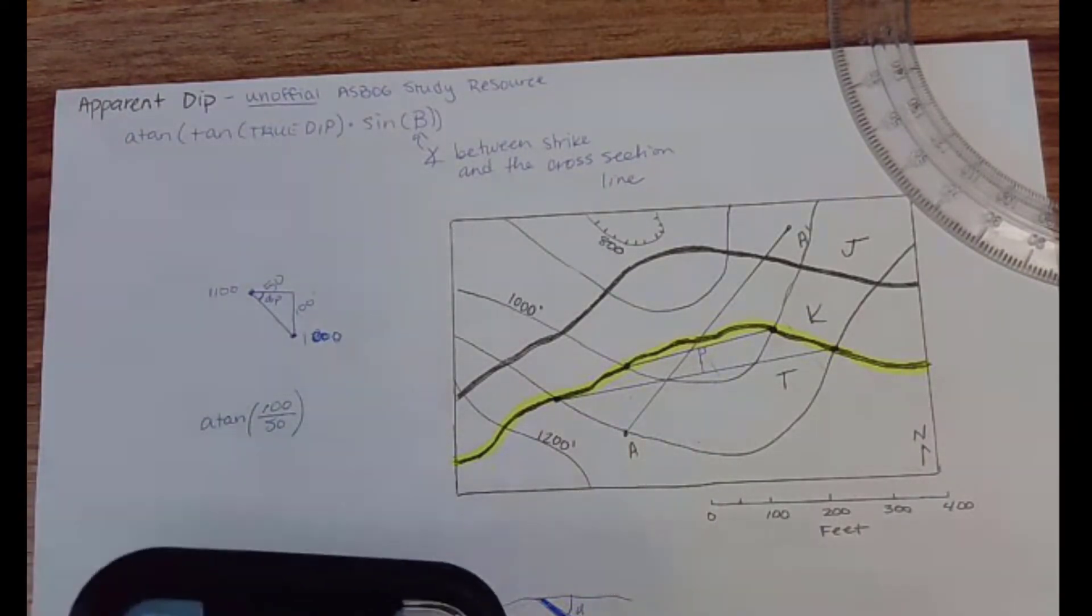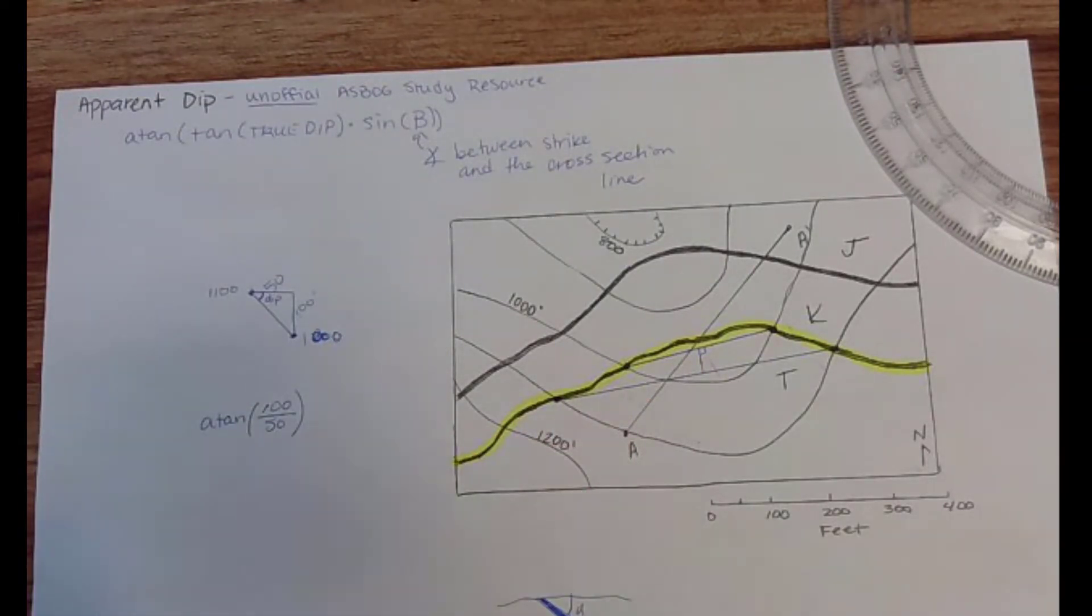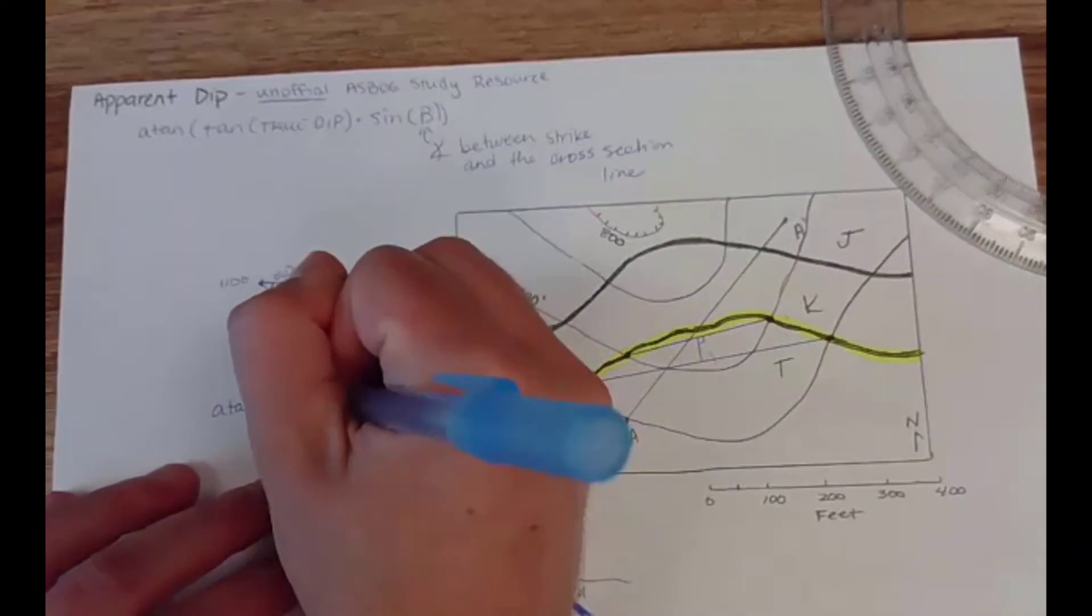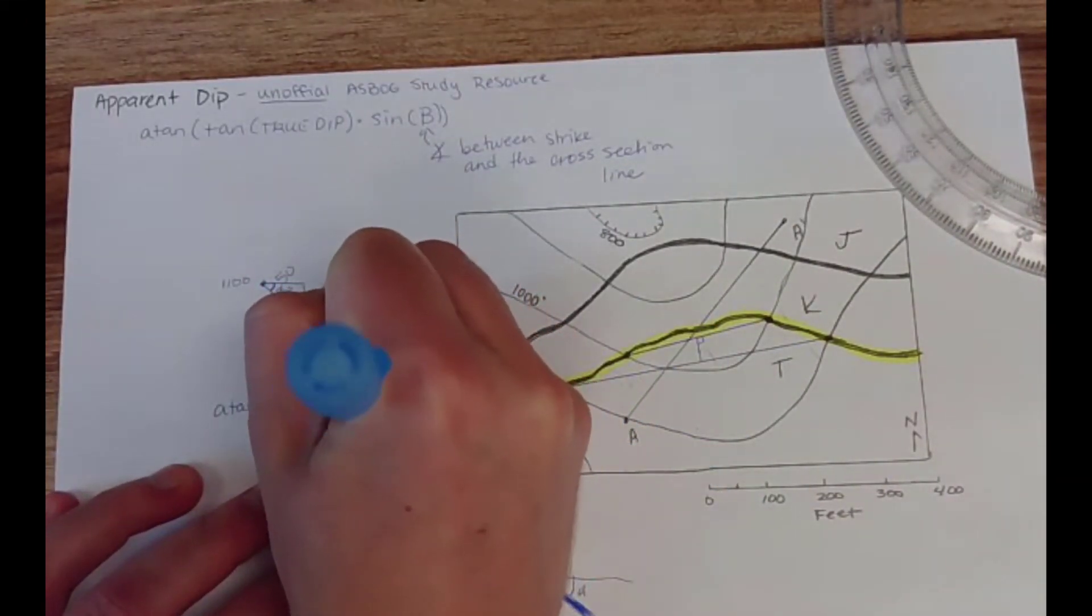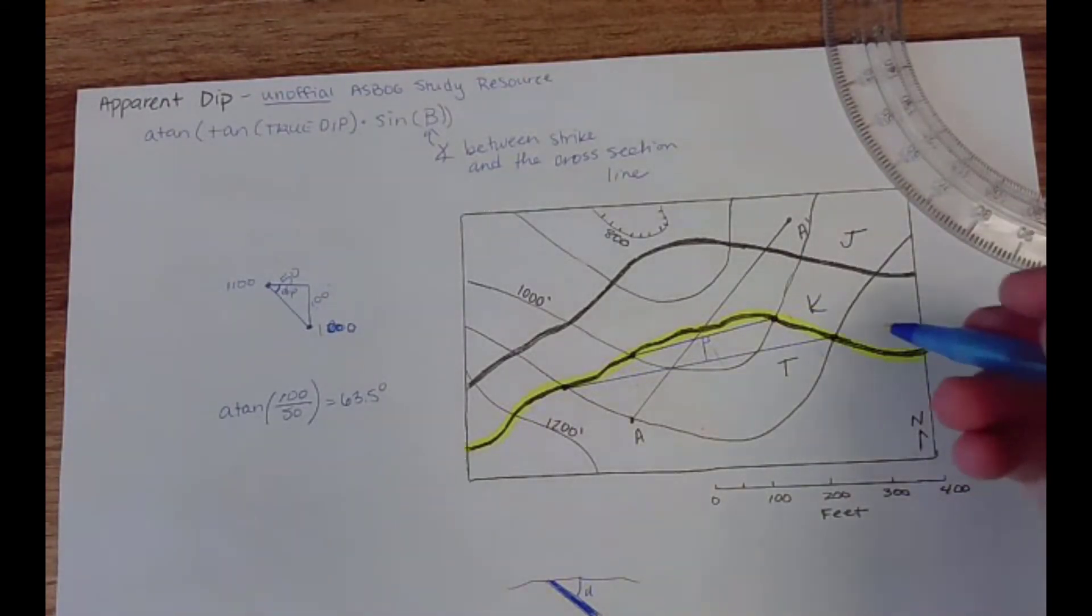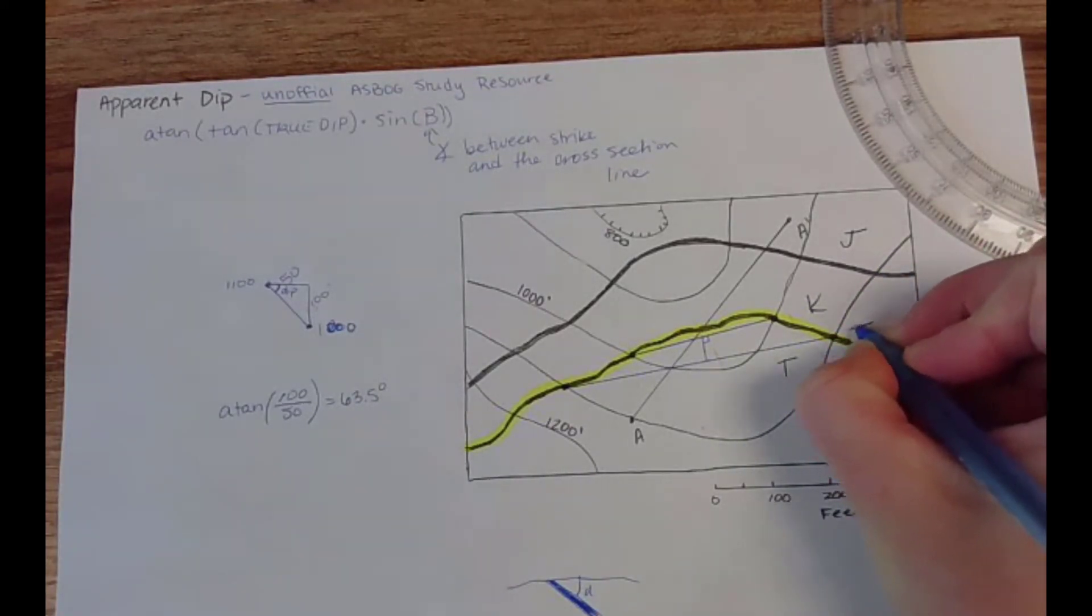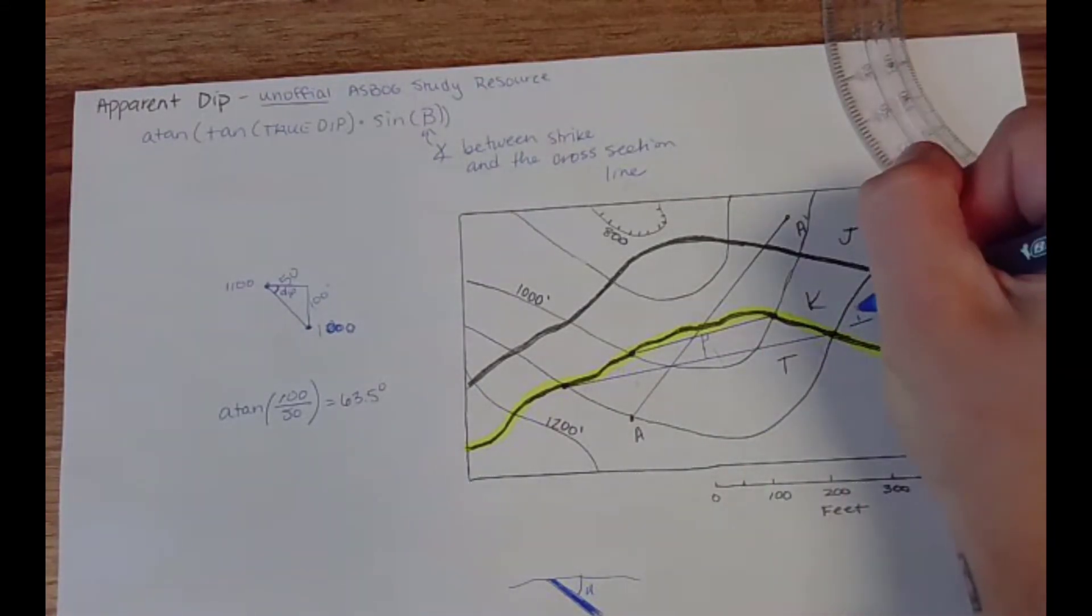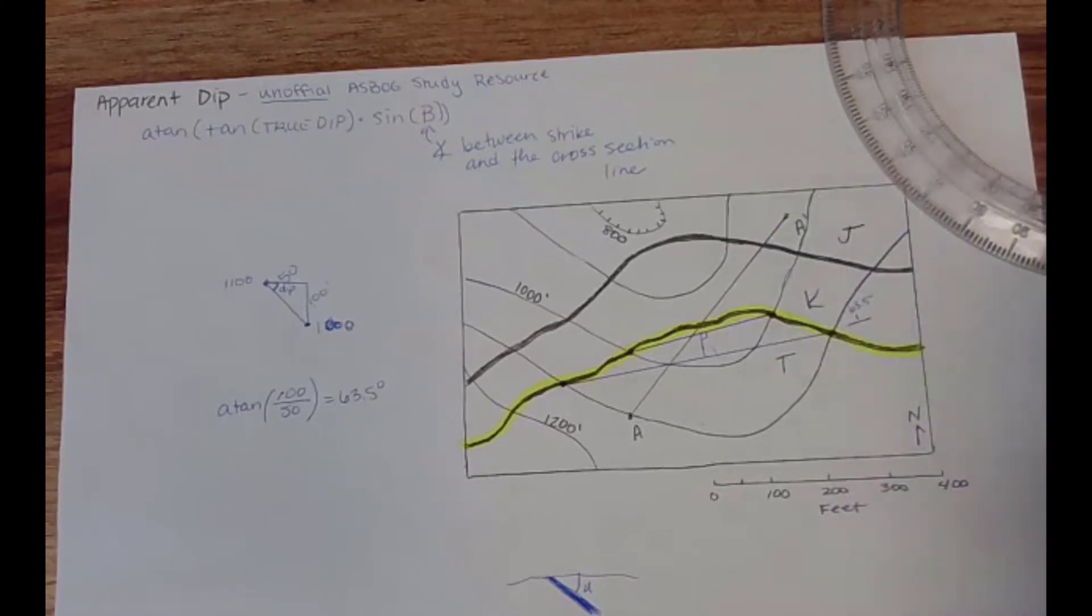I'm gonna grab my calculator - I'm just using my iPhone, you can use obviously just a calculator for the exam, but for this practice I'm just gonna use this. I get 63 and a half degrees, so that's how much my unit is dipping. So that is the true dip. If I could draw in a little dip symbol in here it would be parallel to strike with a dip going down 63.5 degrees.